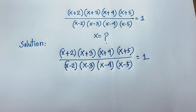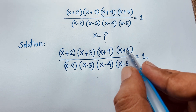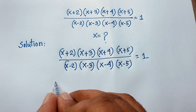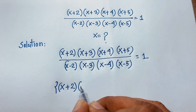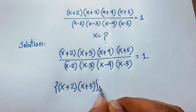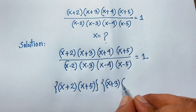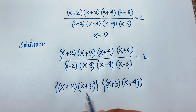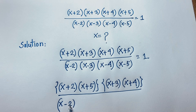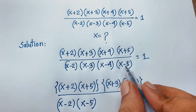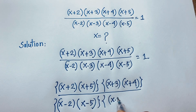Now at this moment I can see that here we have (x+2) and (x+5), so I multiply these together, and also (x+3) and (x+4). So we rearrange the numerator as (x+2)(x+5) times (x+3)(x+4), and the denominator as (x-2)(x-5) times (x-3)(x-4).